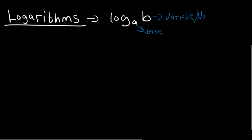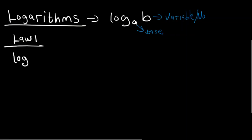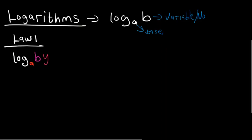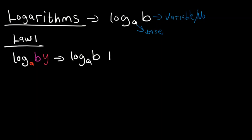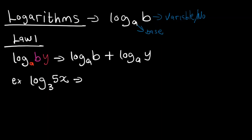Law one of logs says that if you have log of base A and value B multiplied by value Y, to expand this you will say log of base A and value B, plus log of base A and value Y. An example will be log of base 3 of 5X. To expand this, we'll say log of base 3 of 5, plus log of base 3 of X.